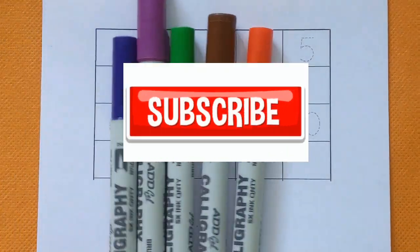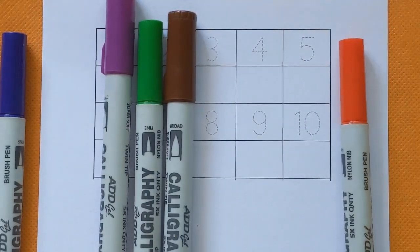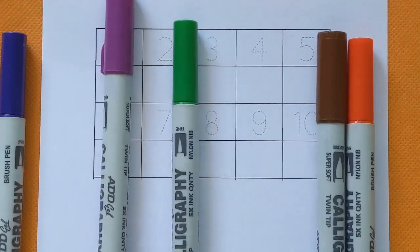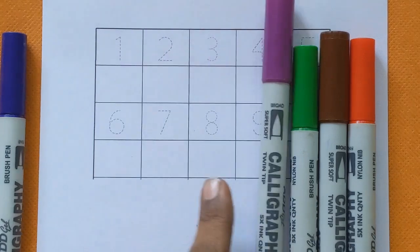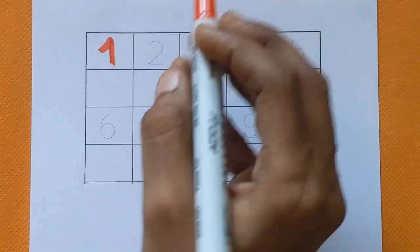Hello guys, welcome back to my channel. Let's learn some color names: red color, brown color, green color, purple color, and violet color. One.